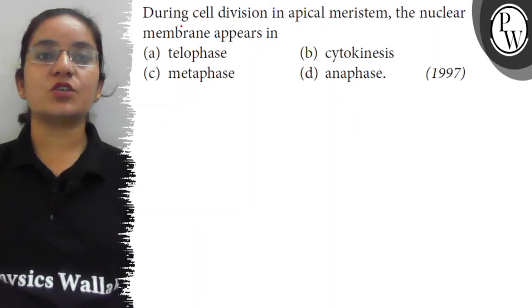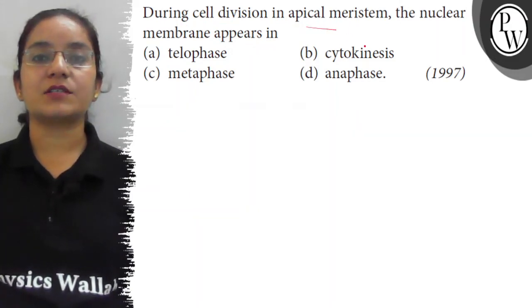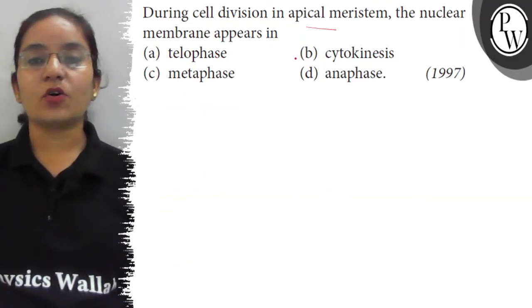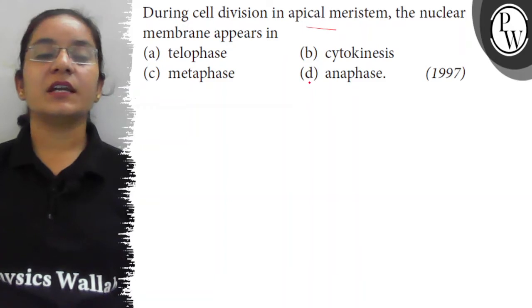Hello students, the question is: during cell division in apical meristem, the nuclear membrane appears in: A. Telophase, B. Cytokinesis, C. Metaphase, D. Anaphase.